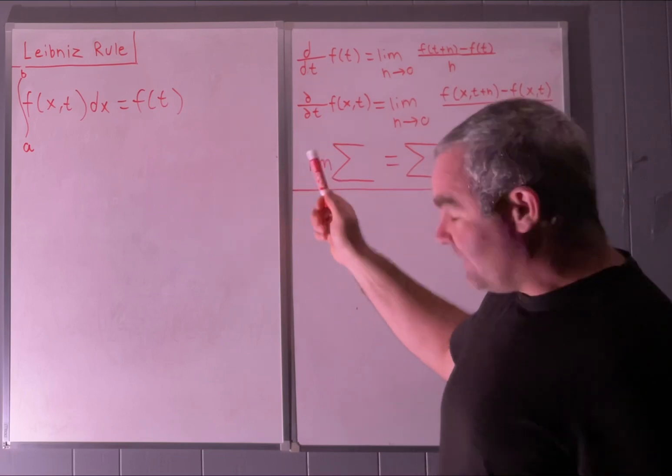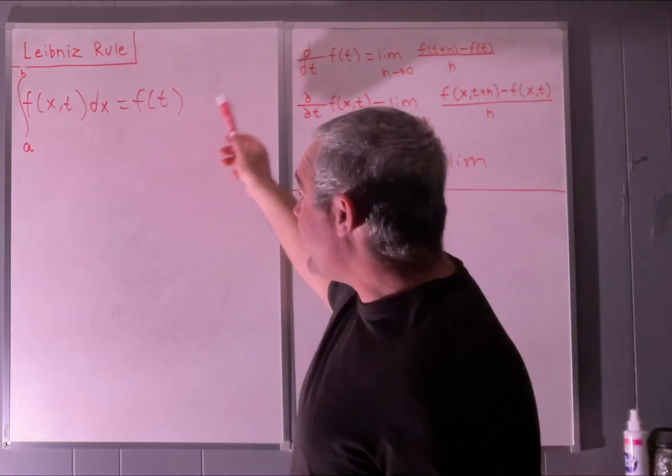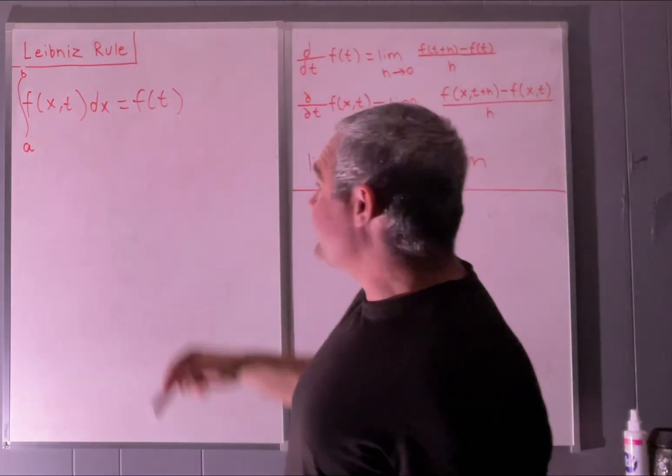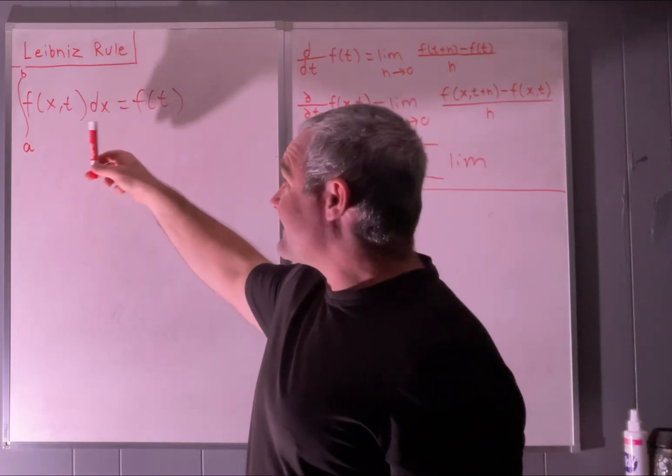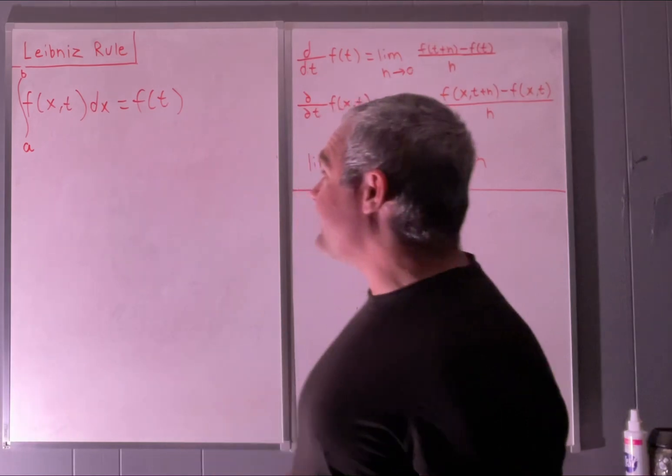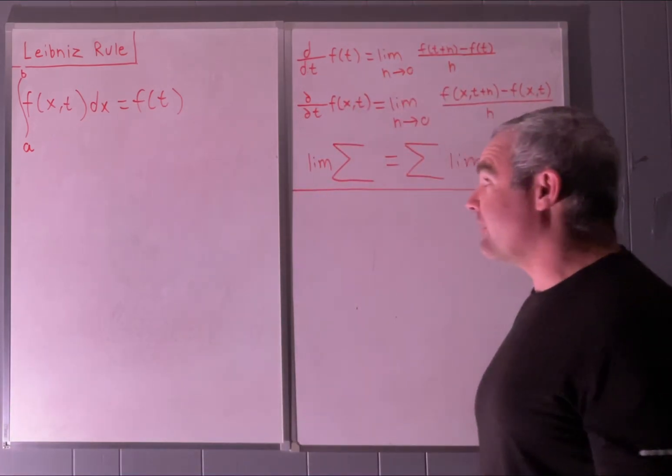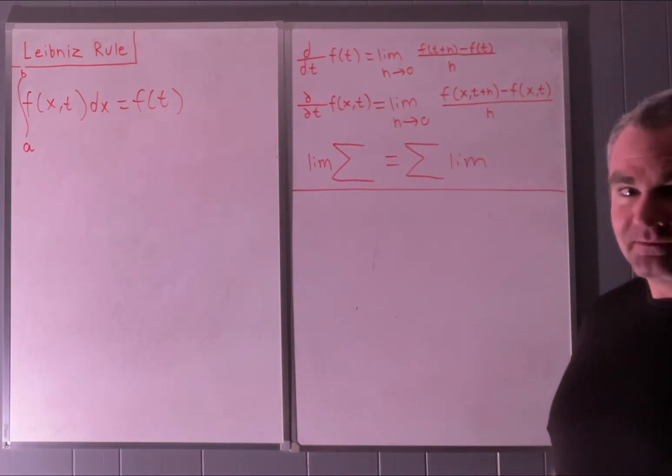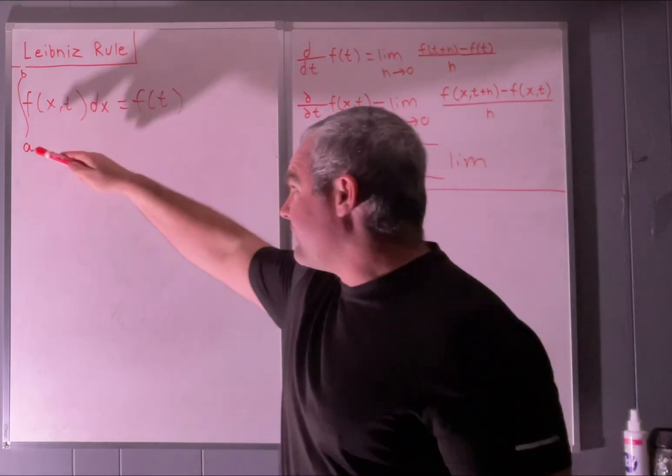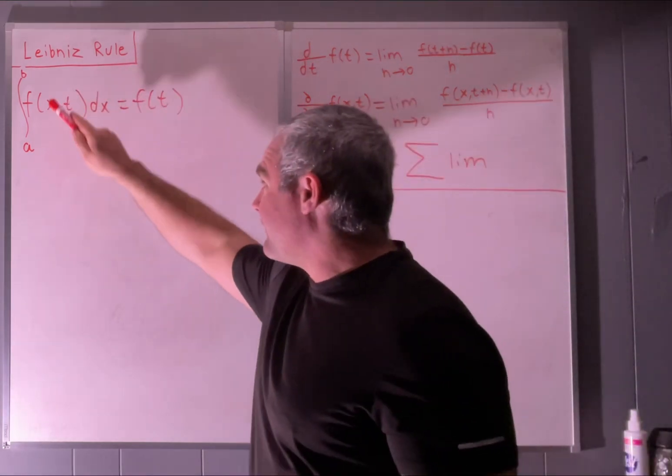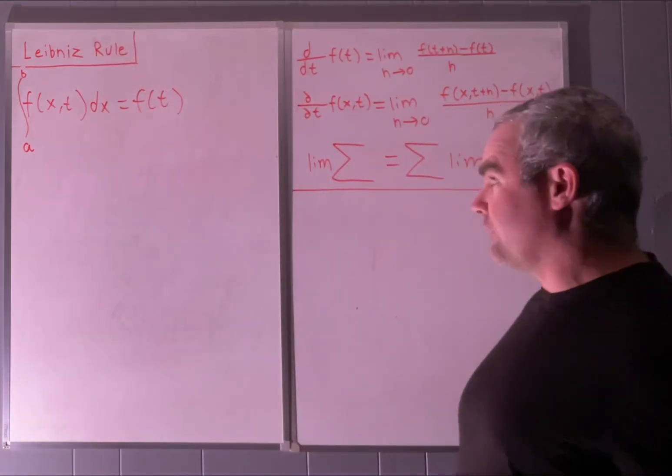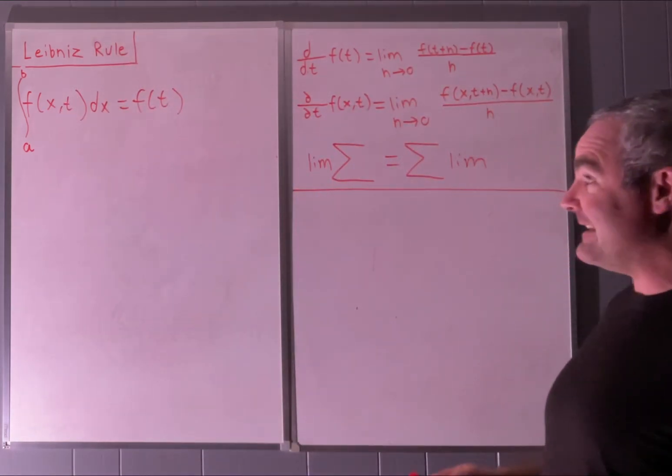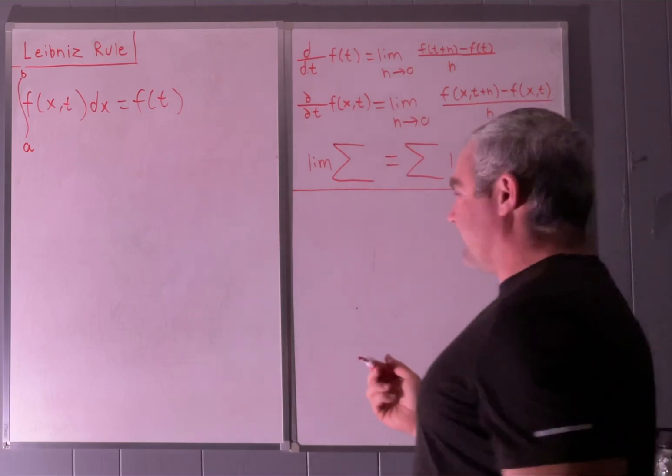The first thing we need to comprehend is that this is true. If you take a definite integral of a function of x and t from a to b and integrate it with respect to x, you'll get a function of t. Because when you're taking a definite integral, you end up plugging in constant values for your x's, leaving you nothing but t's.